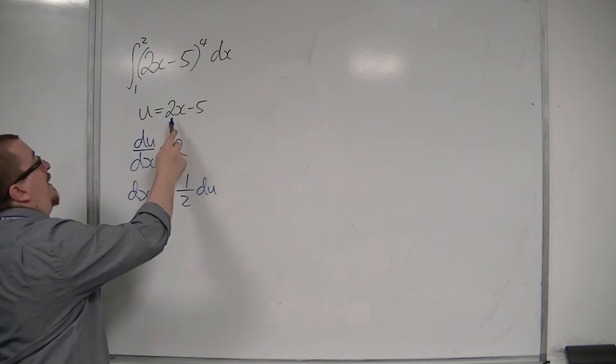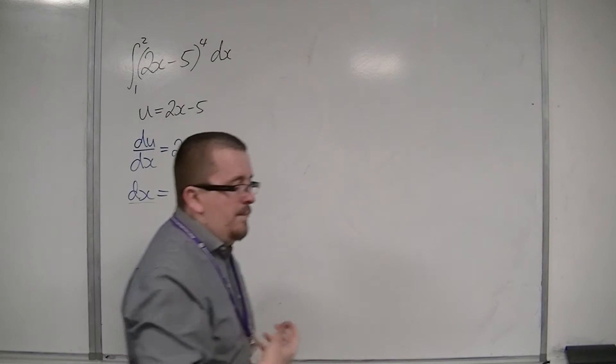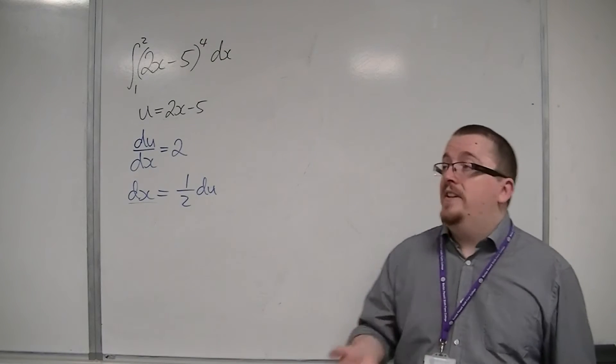So, I now have a replacement for 2x minus 5, and I have a replacement for dx, which initially appears to be all the substitutions that I need to make.